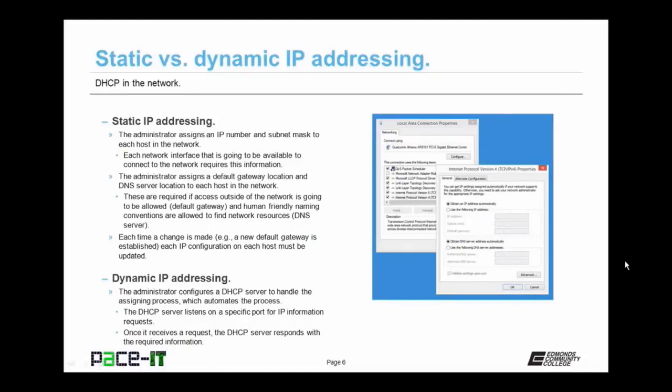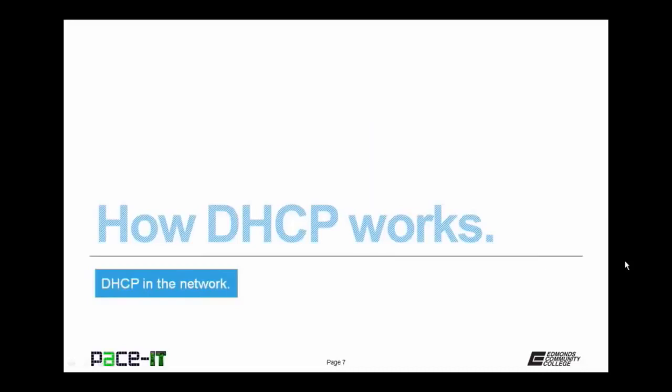With dynamic IP addressing, the administrator configures a DHCP server to handle the assignment process, which automates the process and eases management. The DHCP server listens on a specific port for IP information requests. Once it receives a request, the DHCP server responds with the required information. Now let's move on to how DHCP works.